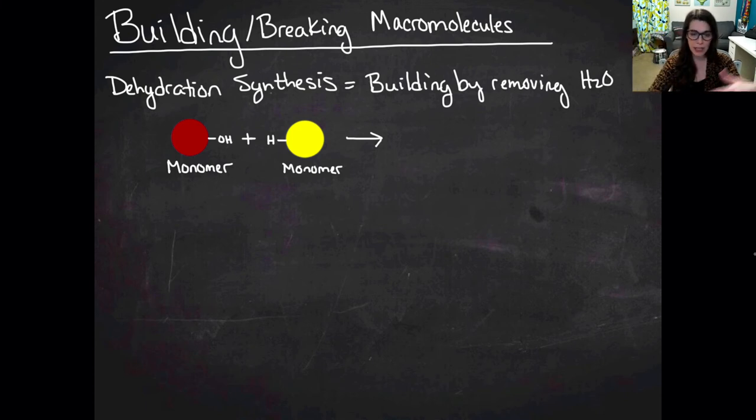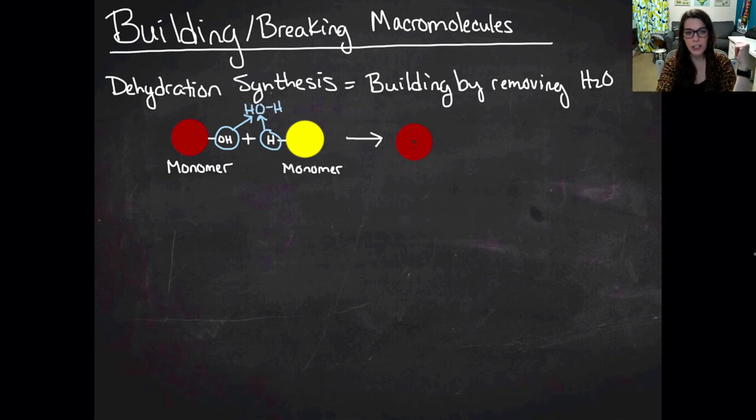And so what ends up happening is under the right environmental conditions, when the correct catalyst is present, you end up having the monomers react together. And so the OH and the H are split off, and they are going to form HOH, which for those of you paying attention, HOH is H2O, that's water.